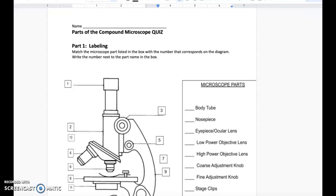Parts of the Compound Microscope Quiz. Part one: we're going to be labeling the microscope parts based on the diagram. Match the microscope part listed in the box with the number that corresponds on the diagram. Write the number next to the part name in the box.